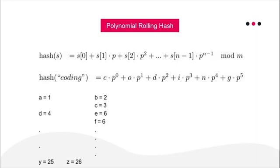I'm starting the mapping from 1, not 0. If we assigned a=0, b=1, etc., then the hash value of "a" would be 0, hash of "aa" would be 0, hash of "aaa" would also be 0. No matter how many a's are in the string, the hash value would always be 0 — causing collisions. That is why we start from 1 instead of 0.